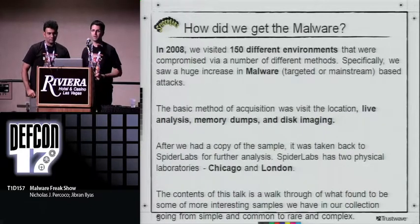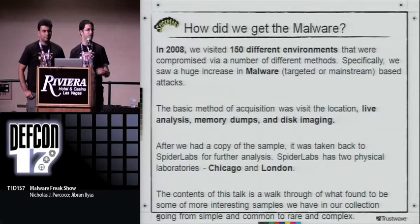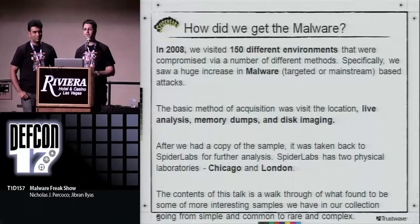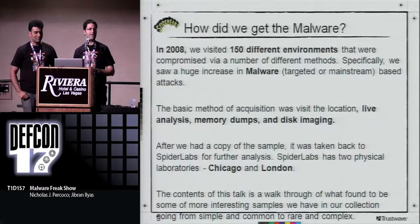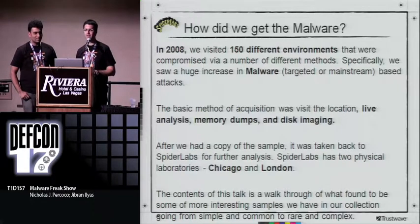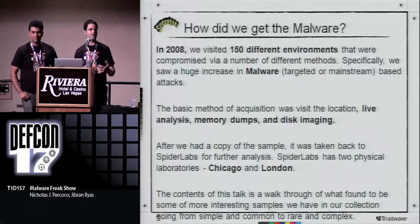How do we get the malware? We didn't just set computers up on the internet and allow people to hack them. The malware we're going to show in the next several slides is actual malware that we took out of environments that were compromised. These environments were confirmed compromised — the data was confirmed taken from these environments and used for fraudulent purposes in the real world. The basic method of acquisition involves live analysis, memory dumps, disk imaging, and then taking it all back to our labs in Chicago or London.